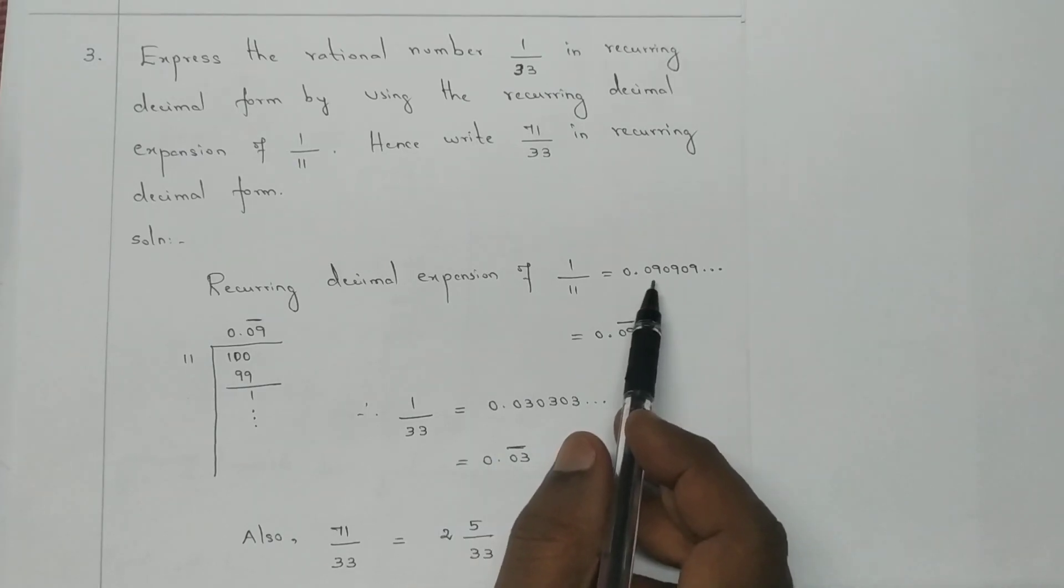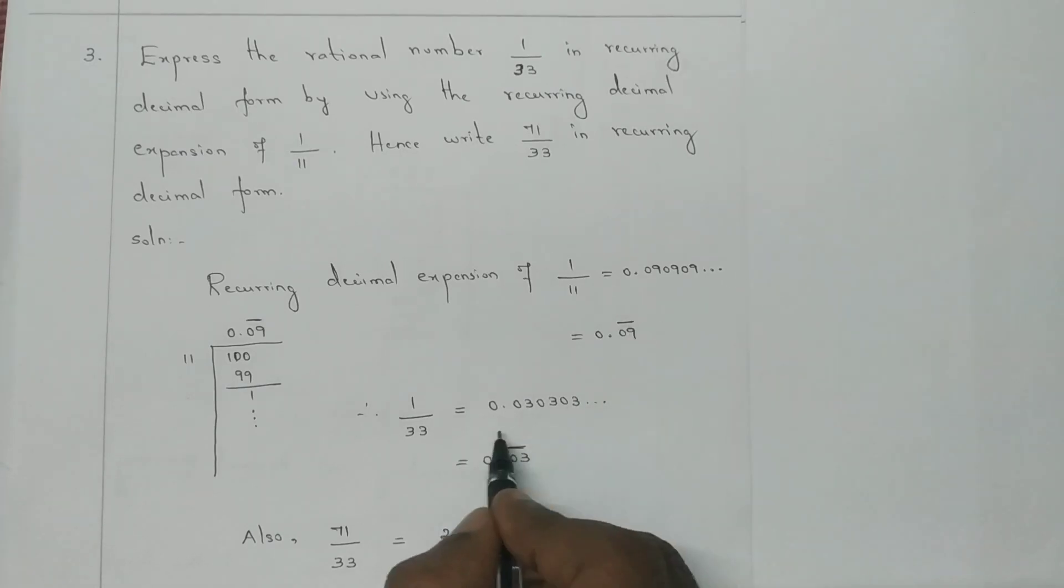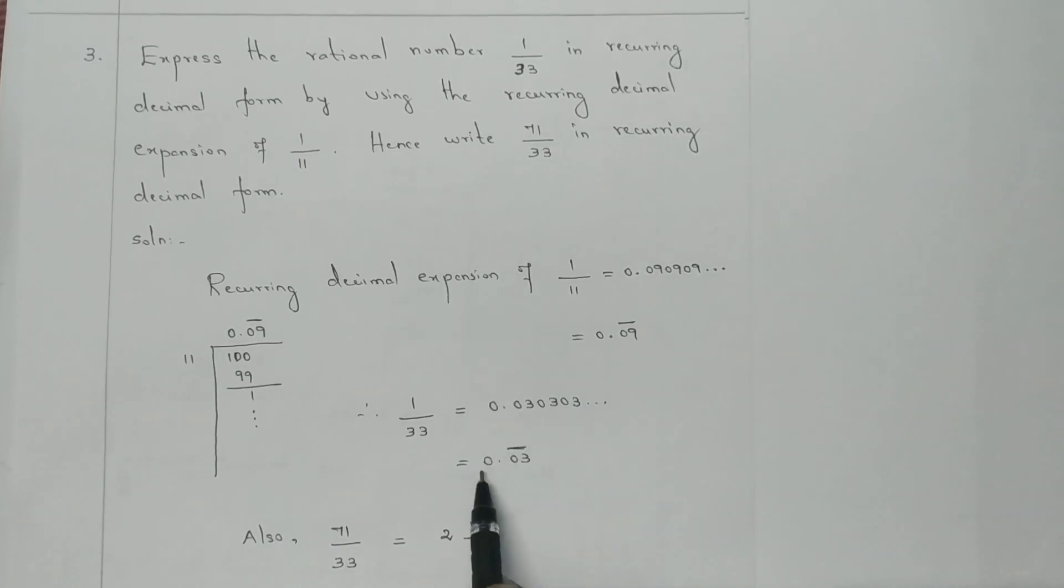Now 1/33 equals 0.03 bar. So 0.03, 03, 03... That is 0.03 bar repeating. We can relate 1/11 to 1/33. Now we are going to use this result for 1/33.